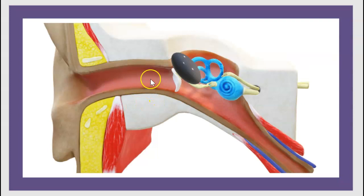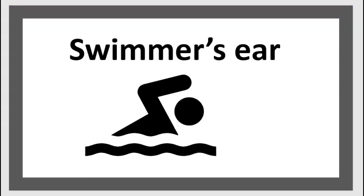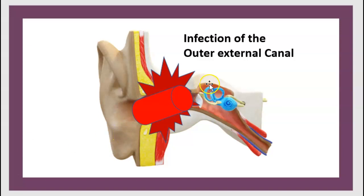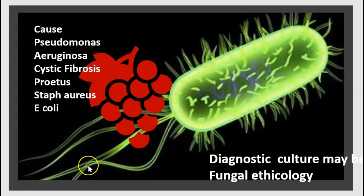Here's the ear canal. Otitis externa of the ear canal is also called swimmer's ear. Water is trapped inside the ear canal, causing bacterial infection, with itching, smelling, pain, and discharge. This is an infection of the outer external ear canal.